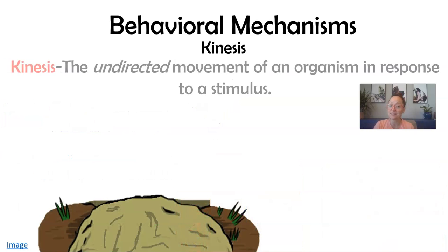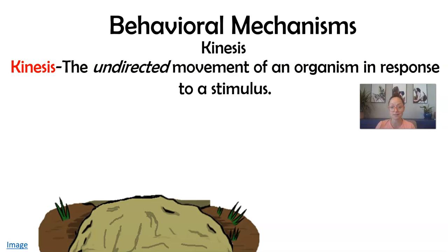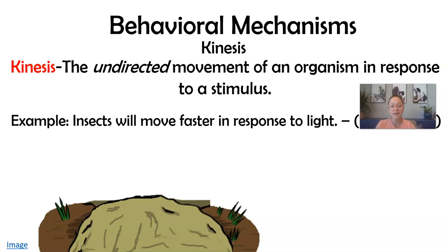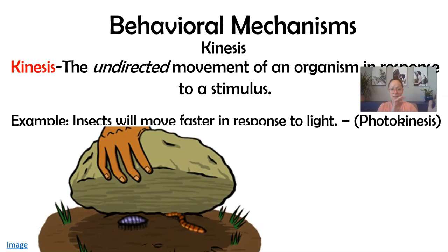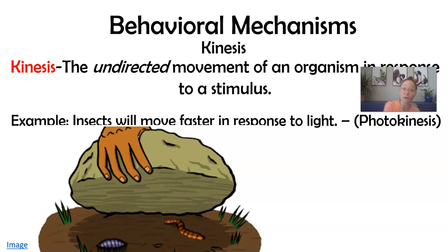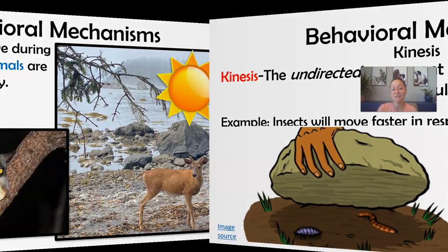Kinesis is the undirected movement of an organism in response to a stimulus. When you lift up rocks while camping and insects underneath are exposed to sudden bright light, they scramble and move very fast — that's undirected movement. They're not chasing prey but rather exhibiting frantic movement. In this example of insects responding to an increase in light, that's called photokinesis.